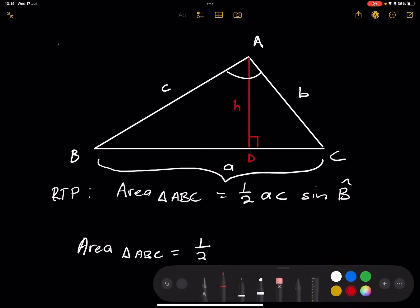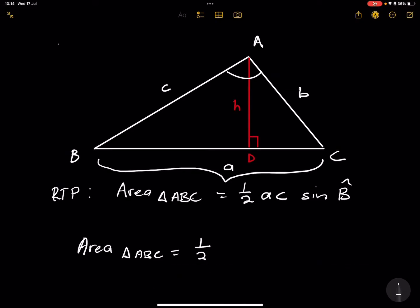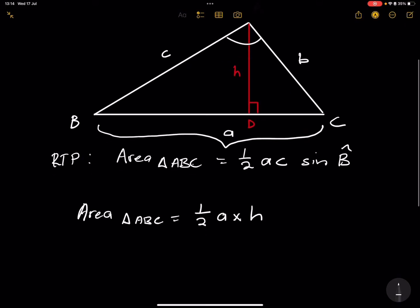So the area of triangle ABC will be half of the base, which is BC, which is small side A, multiplied by the height, which is the perpendicular height H. So that's how we always determine the area of a triangle.